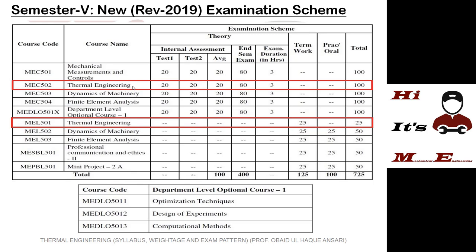When these two subjects were combined, a new subject vacancy was created and a new subject was added in the 5th semester: finite element analysis, which was in the 6th semester in the old scheme. Regarding practicals, mechanical measurement and control practical and oral have been totally removed. In thermal engineering you have term work but no external practical oral — previously IC engine and heat transfer had separate practical orals, but now combined, there is only term work to perform and a file to submit. However, external oral exams still exist for dynamics of machinery, finite element analysis, professional communication and ethics 2, and mini project 2A.